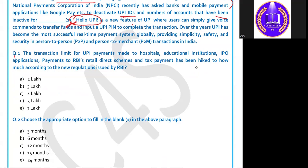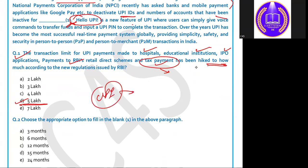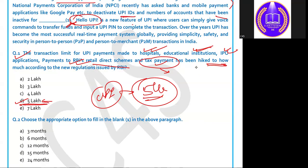Question 1: The transaction limit for UPI payments made to hospitals, educational institutions, IPO application payment, RBI's direct retail schemes, and tax payment has been hiked to how much? The answer is 5 lakhs. So UPI payment up to 5 lakhs is allowed for these five categories: hospital payment, educational institution payment, IPO application for buying an IPO, RBI direct retail schemes, and tax payment. Remember these five.